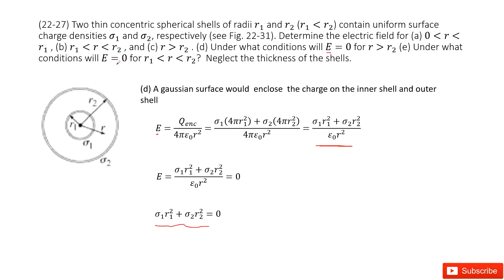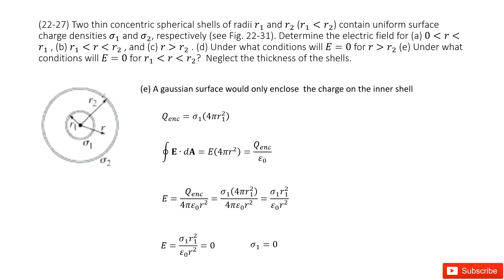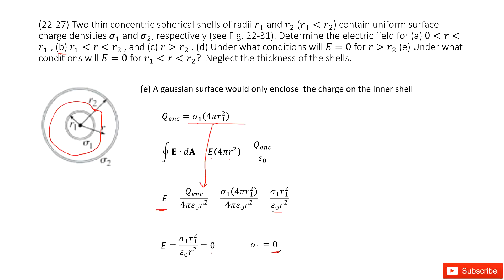Under what condition does E equal zero for r between R1 and R2? This is case B. The enclosed charge is φ1 times the inner surface area 4πR1². Applying Gauss's law and solving for E, if we want E to equal zero, the only choice is φ1 equal to zero. Thank you.